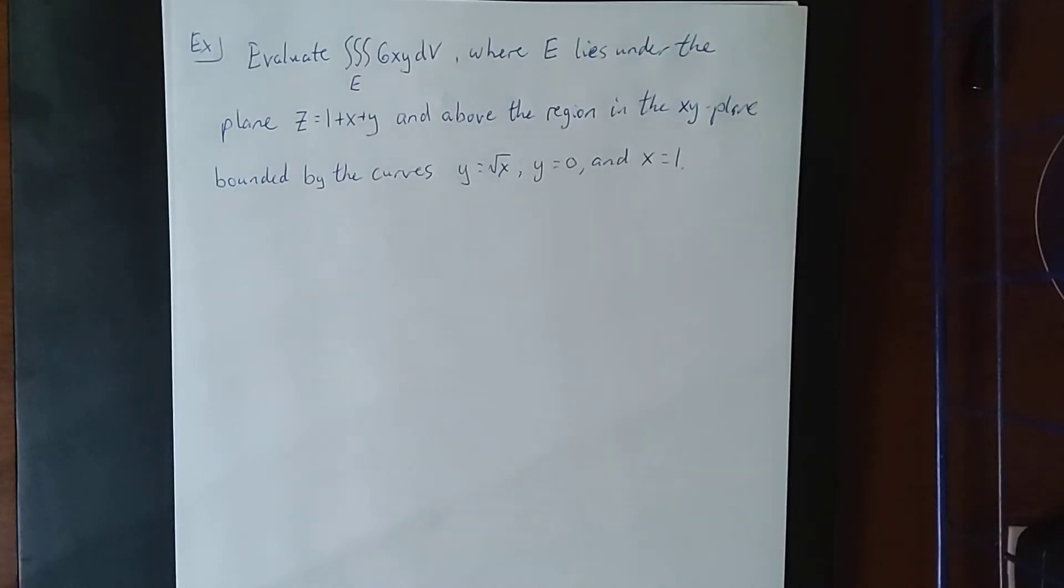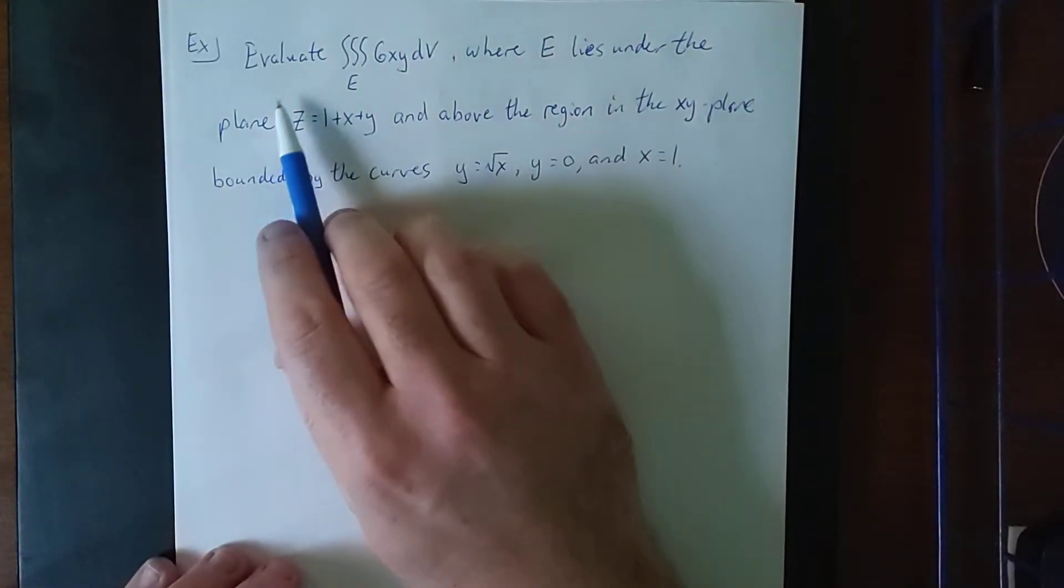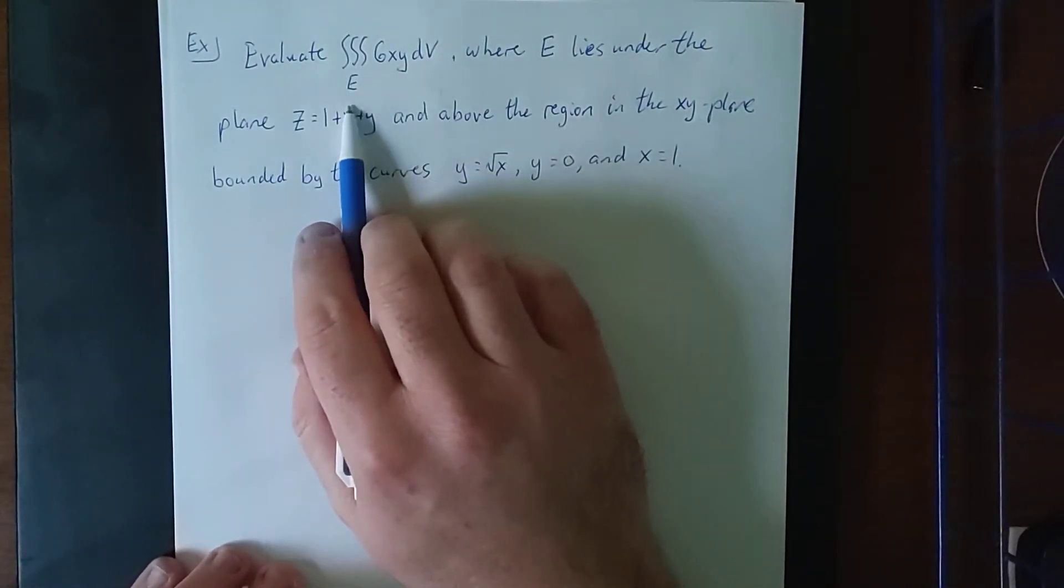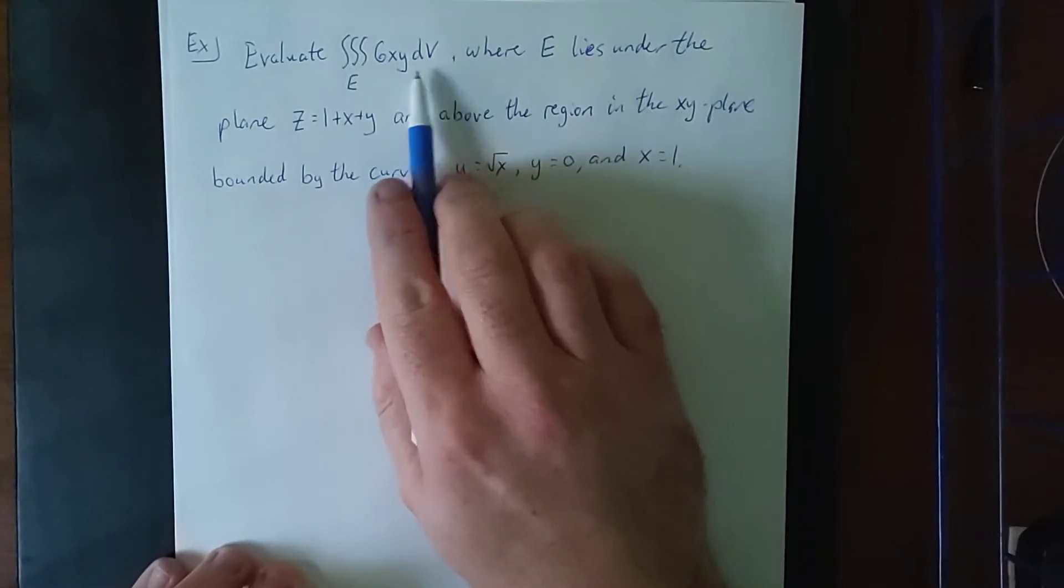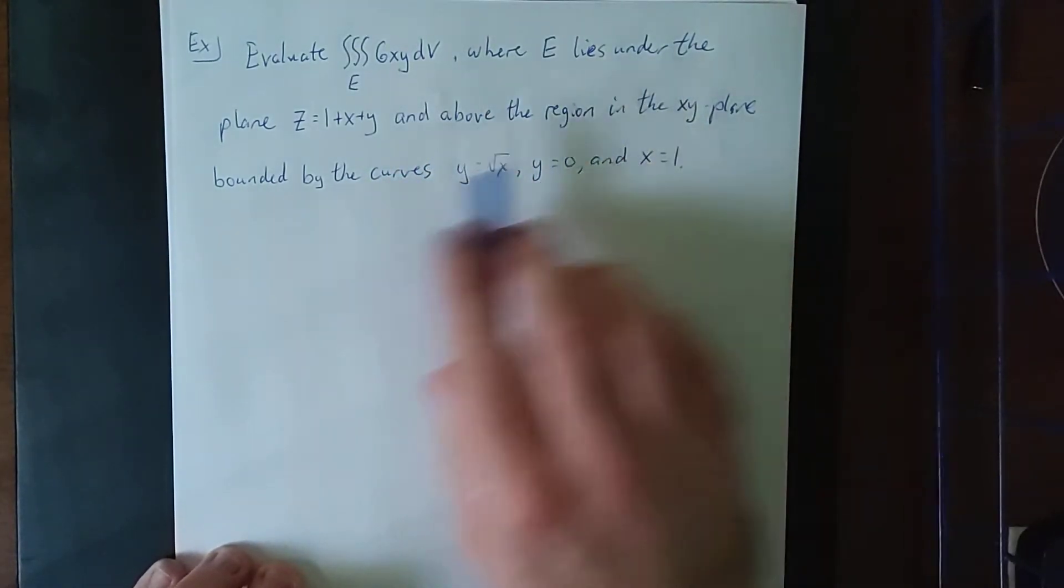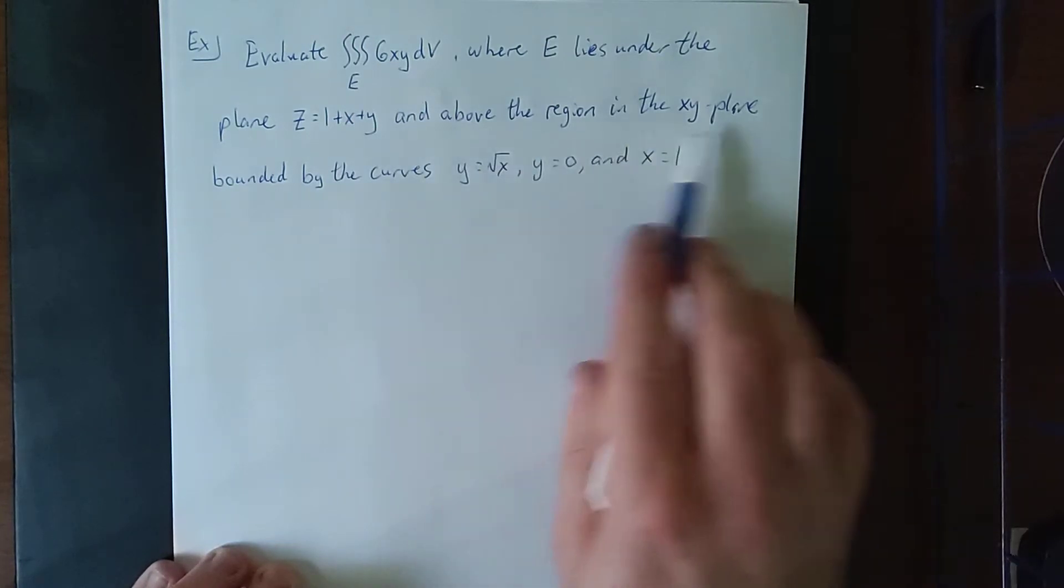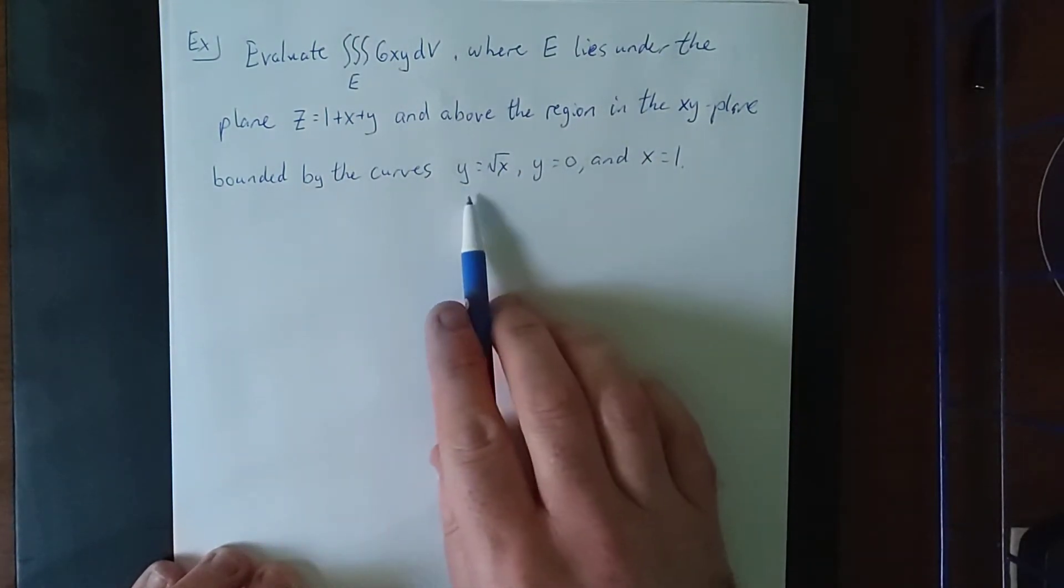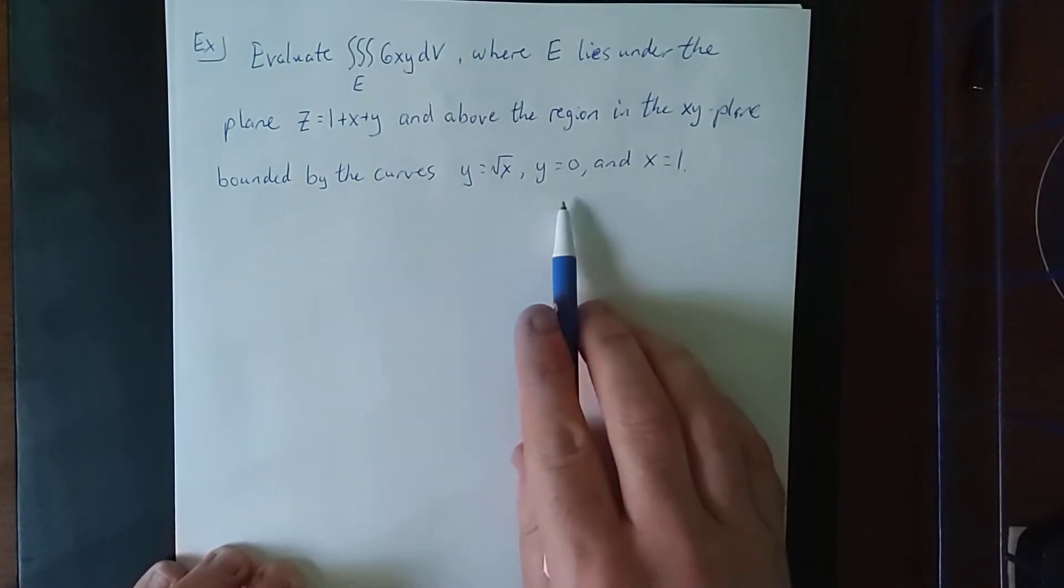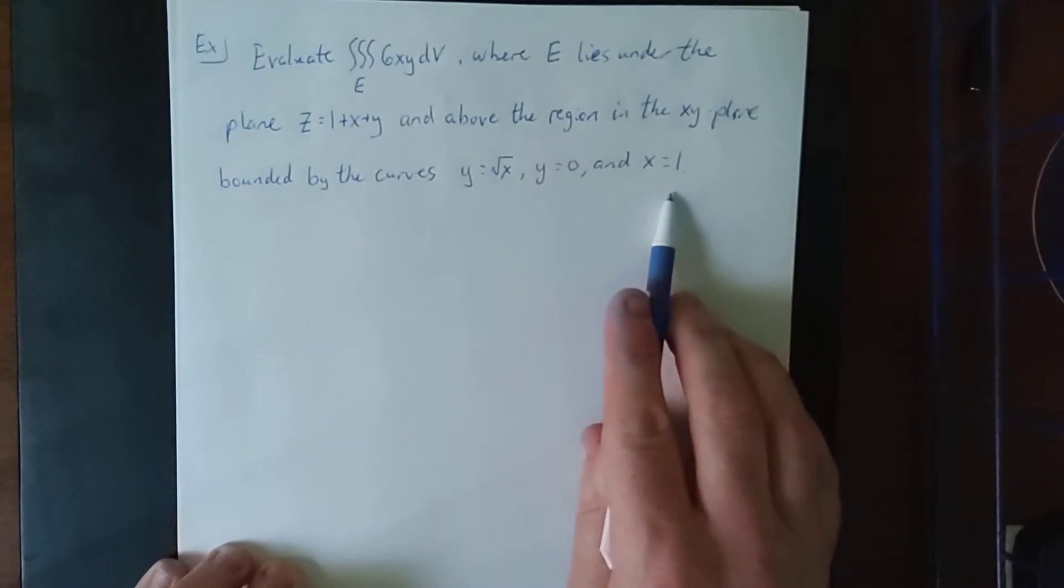To demonstrate the setting up and evaluating of a triple integral, I'd like to consider the following problem. I'd like to evaluate the triple integral over the solid E of 6xy dV, where E lies under the plane z equals 1 plus x plus y, and above the region in the xy plane bounded by the curves y equals the square root of x, y equals 0, and x equals 1.